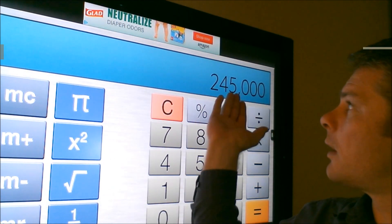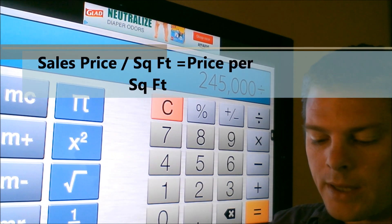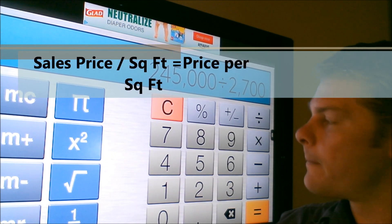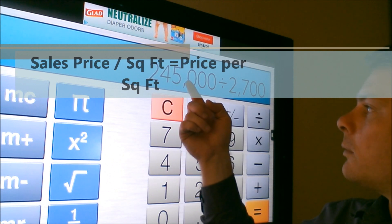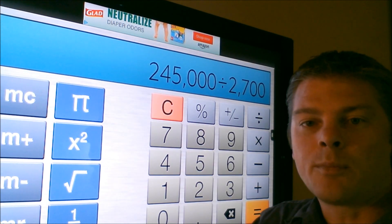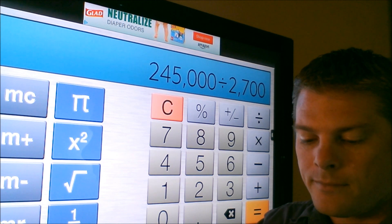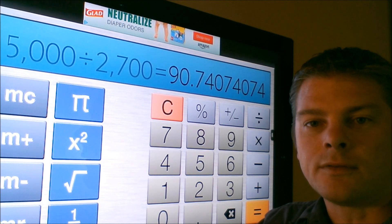So what we do is we take the price of the house, we divide it by the 2,700 square foot. So the price divided by the square footage, that will give you the price per square foot. There you go, $90.74.